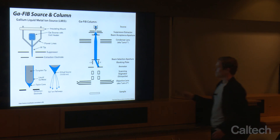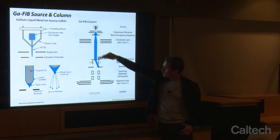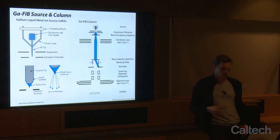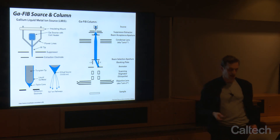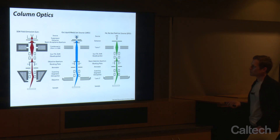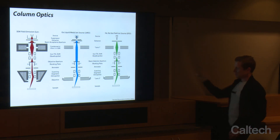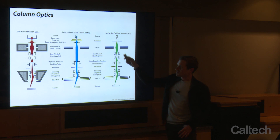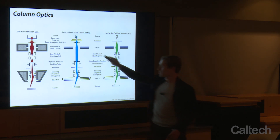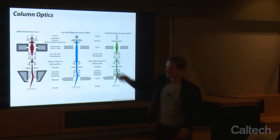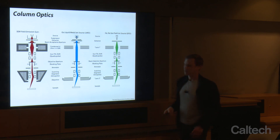We can apply a voltage to the blanking plate and direct the beam onto an ammeter to measure the current in our beam. And as I said, we can look at the optics of the three different types of microscopes — the only thing missing in the gallium-focused ion beam system are the steering optics.